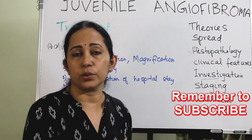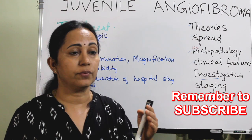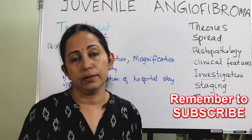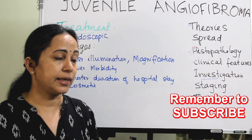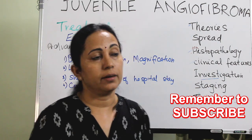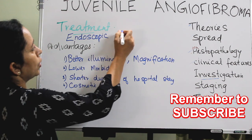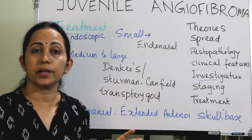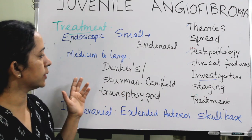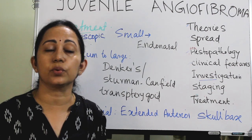The approach for endoscopic surgery depends on tumor size and extent. While identifying the feeding vessel — if it comes from posteriorly and is difficult to visualize endoscopically — it is better to go for an open approach. For small tumors, we can use an endoscopic endonasal approach.